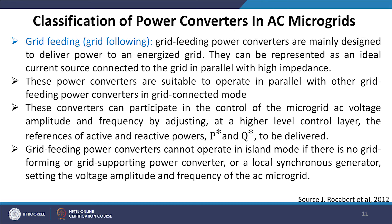Let us consider the classification of power converters in AC microgrids, starting with grid feeding or grid following. Grid feeding power converters are mainly designed to deliver power to an energized grid. They can be represented as an ideal current source connected to the grid in parallel with a high impedance. These converters are suitable to operate in parallel with other grid feeding power converters in grid-connected mode. They can participate in the control of the microgrid AC voltage amplitude and frequency by adjusting, at a higher level control layer, the reference of the active and reactive power P and Q to be delivered.